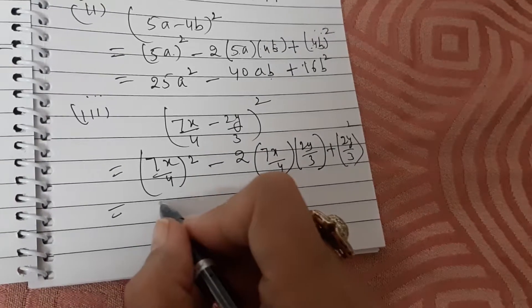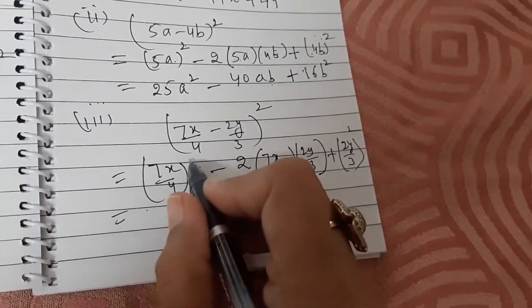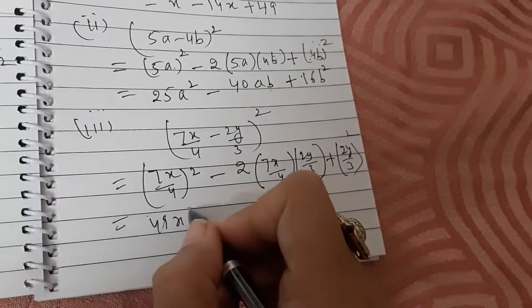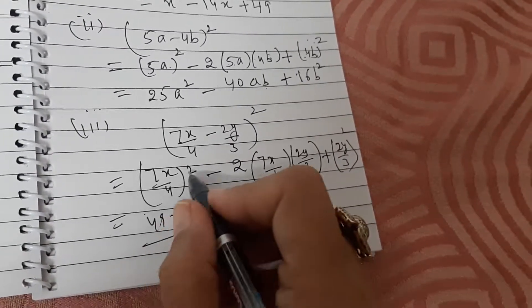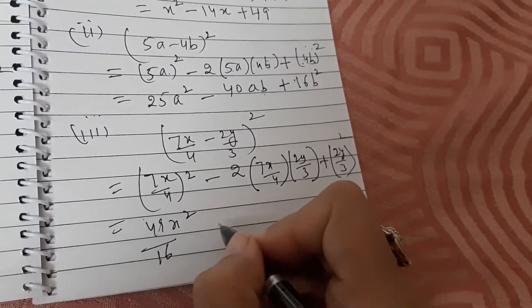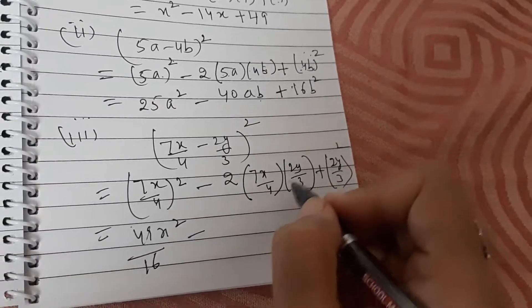Simplify this. 7 square is 49, x square is x square, and in the denominator 4 square is 16. Minus—now can you simplify this?